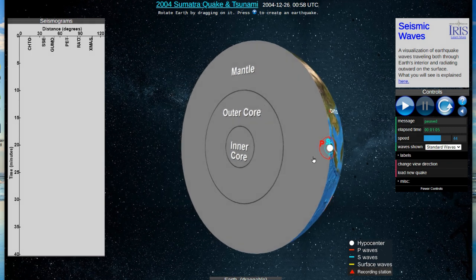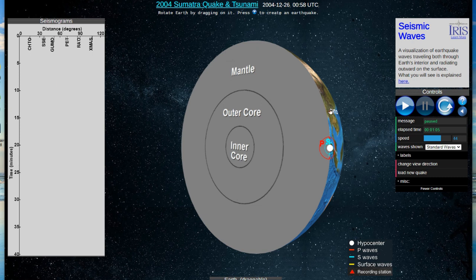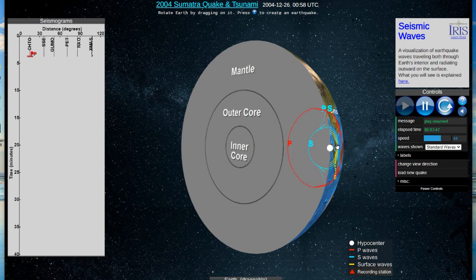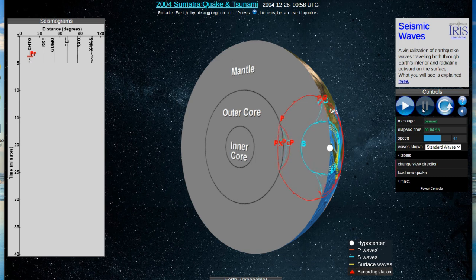But the crust will be very important because it will channelize a lot of this energy producing what we call surface wave. Now this wave will propagate again in all directions and some of them will go inside the Earth.